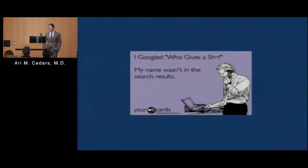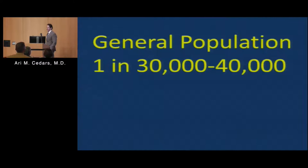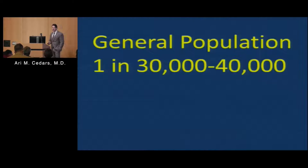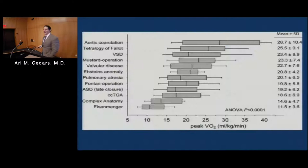So what? Pulmonary arterial hypertension is about as common as hen's teeth in the general population — the prevalence is 1 in 30,000 to 1 in 40,000. However, this is a group of adult congenital heart disease patients, and in adult congenital heart disease patients the prevalence is 1 in 10 to 20. So 5 to 10 percent of the people in this room probably have pulmonary arterial hypertension.